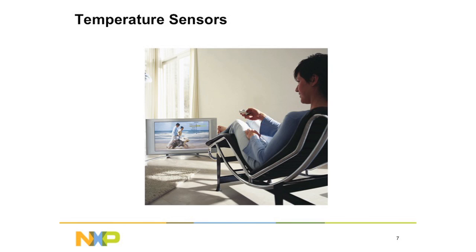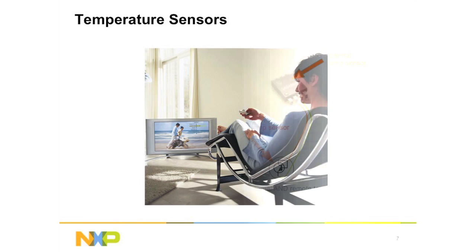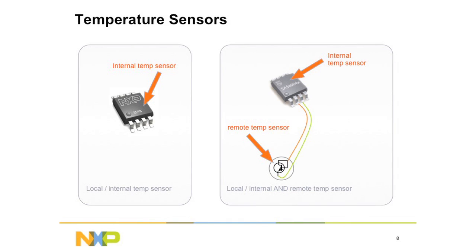Another emerging application for embedded electronic temperature sensors is in LCD flat panel televisions that use energy-efficient LED backlighting. The LED performance will be degraded in both color quality and light output if the LEDs are allowed to reach higher temperatures, reducing the television's clarity and shortening its useful life.